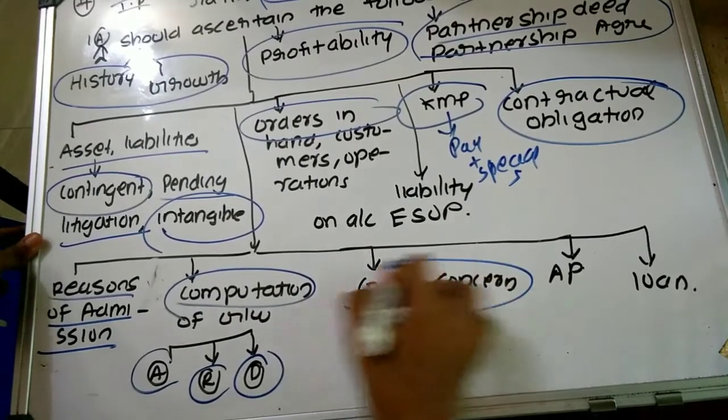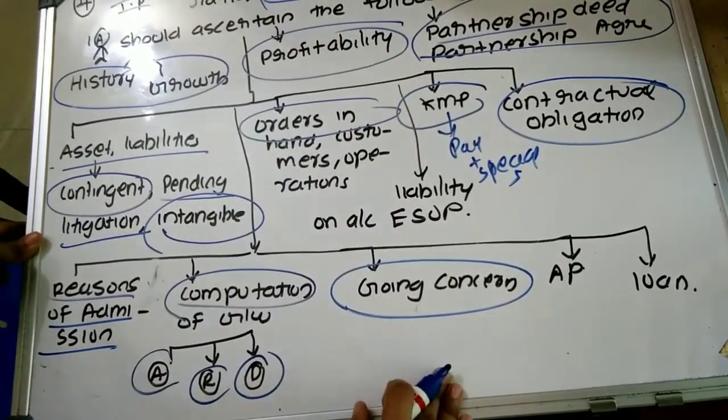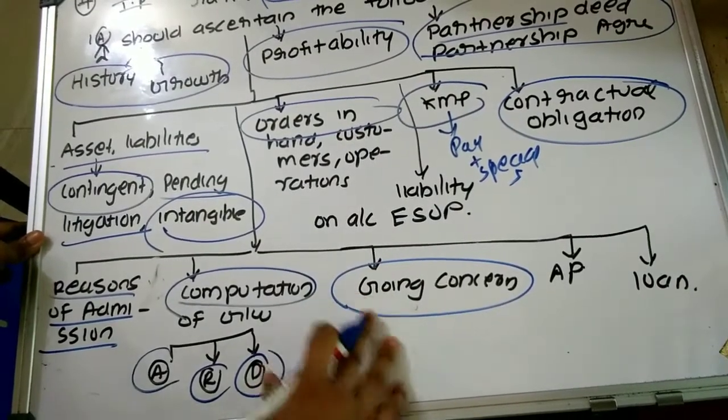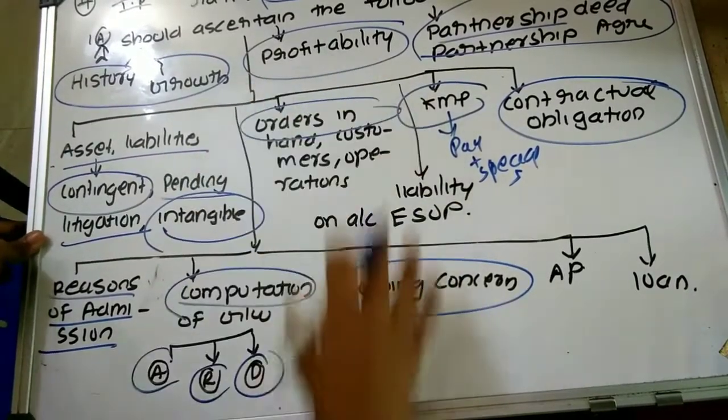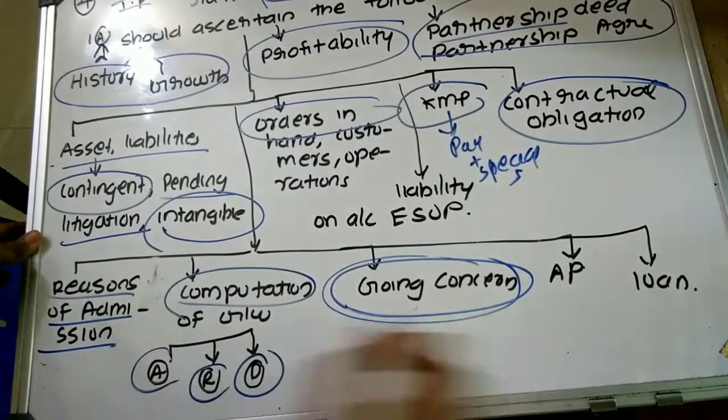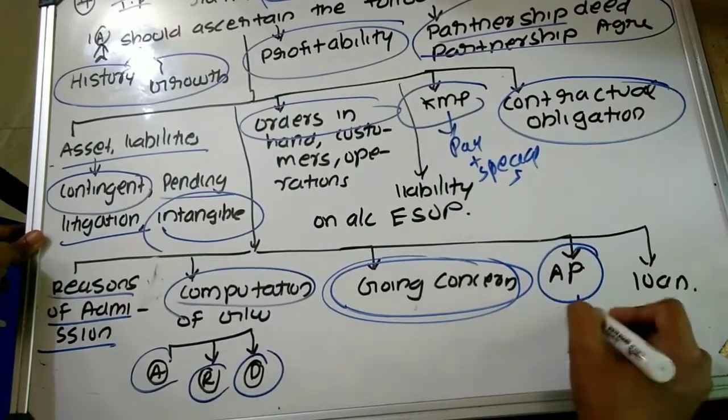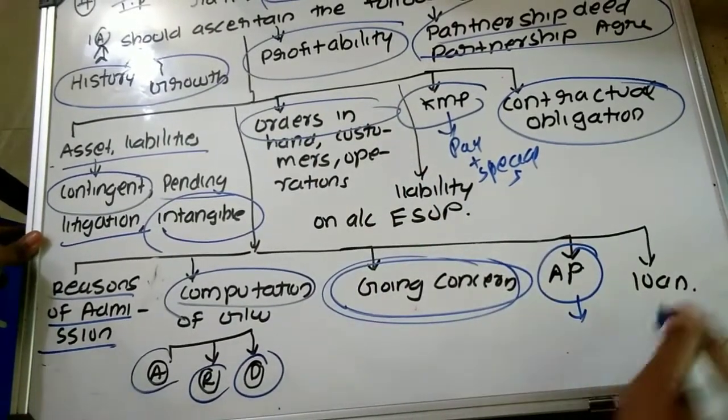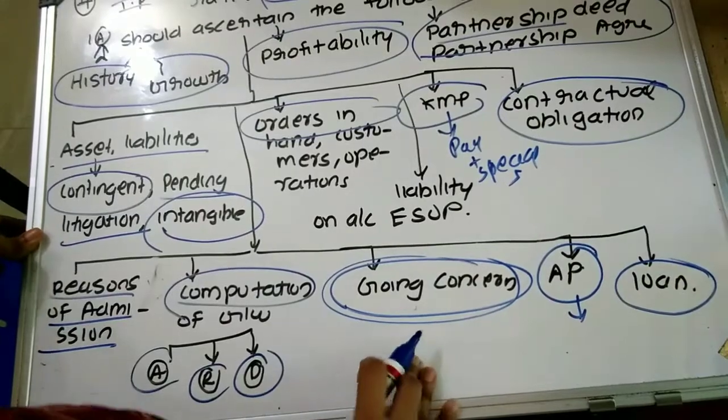They should determine whether the partnership firm is conducting business as per going concern—that is, the business will continue for the foreseeable future. Whether this firm is carrying business according to going concern assumption, which accounting policies are followed, whether there is consistent application, and the position of law.